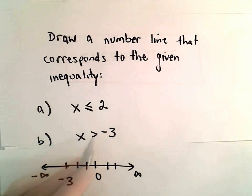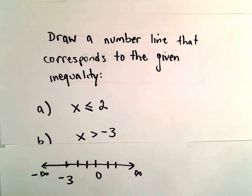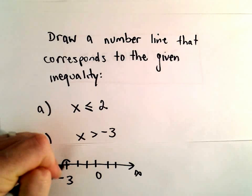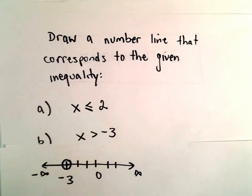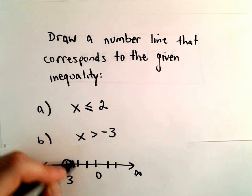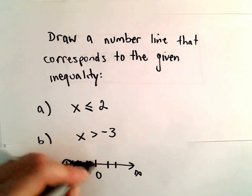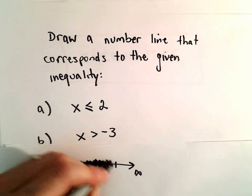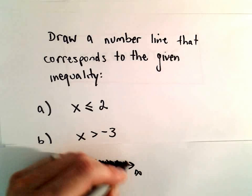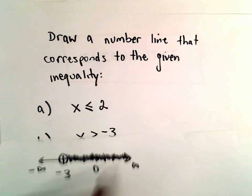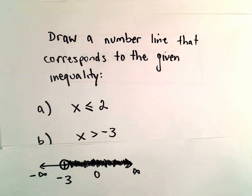Since it has to be strictly greater than negative 3, what we do to indicate that it can't equal that number is we use an open circle. An open circle to indicate that we don't use negative 3. But that's right where we start — we take every number that's even just a little bit greater than negative 3 and include that. So: open circle, shade to the right.